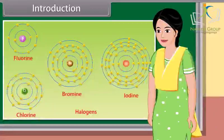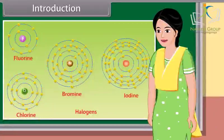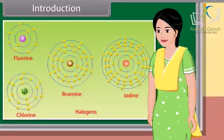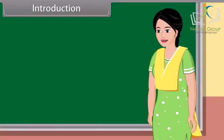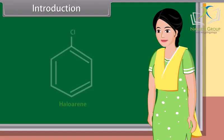So now, can anybody tell me what haloarenes are? Yes, ma'am. Haloarenes are the molecules in which halogen atoms are bonded with carbon atoms that are a part of an aryl ring. Very good, Rohit. In this lesson, we will learn more about haloalkanes and haloarenes.